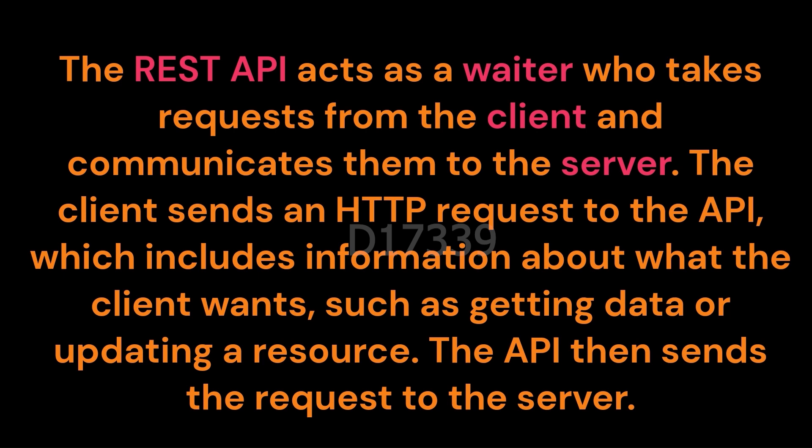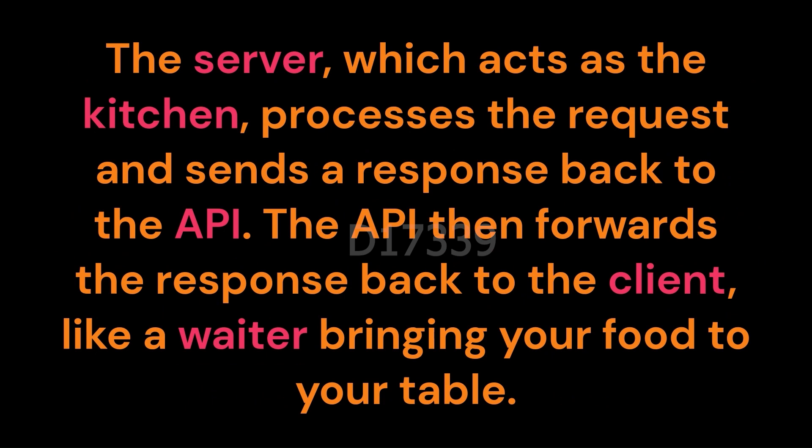The client sends an HTTP request to the API, which includes information about what the client wants, such as getting data or updating a resource. The API then sends the request to the server. The server, which acts as the kitchen, processes the request and sends a response back to the API. The API then forwards the response back to the client, like a waiter bringing your food to your table.